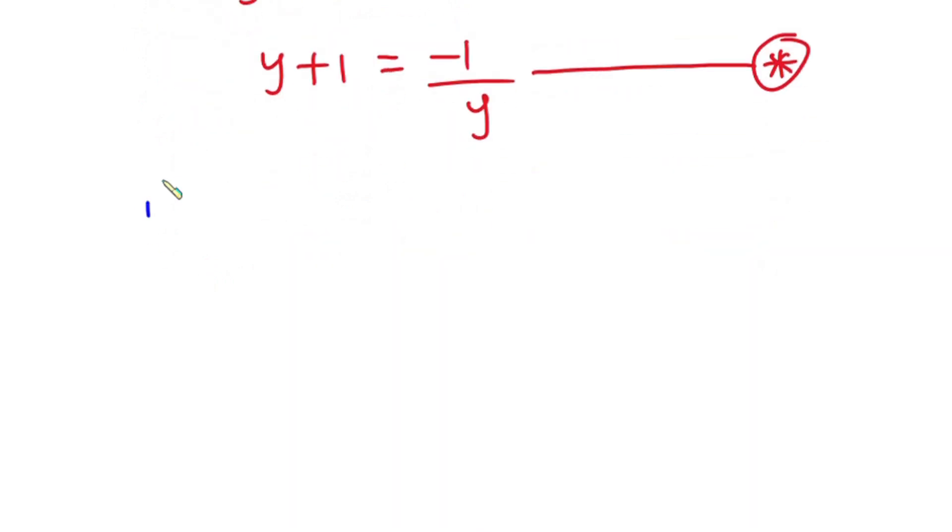And now we have y to the fifth power plus y to the fourth power plus 1. So from here, I can factor y to the fourth power out. So we have y to the fourth power into y plus 1, then this one over here.